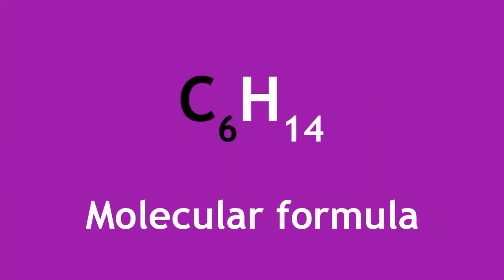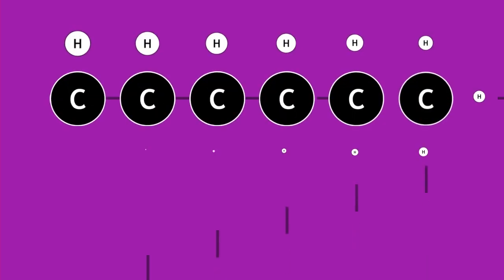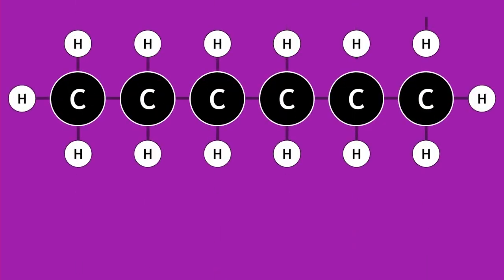Molecular formula is another type used, and shows us only the number of each type of atom in the compound. To work out the molecular formula, you simply add up each type of atom. For example, here is the displayed formula of hexane. As you can see, it has 6 carbon atoms, and it has 14 hydrogen atoms. The molecular formula of hexane is therefore C6H14.